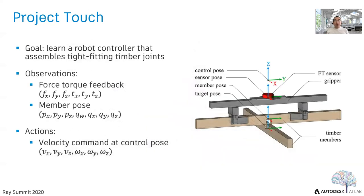In Project Touch, the goal is to learn a robot controller that assembles tight-fitting timber joints. The observation space includes torque force feedback and the member pose — in total 13 dimensions — and actions are velocity command and control pose.